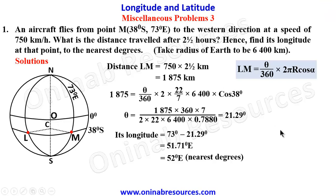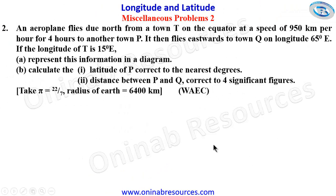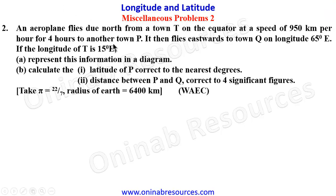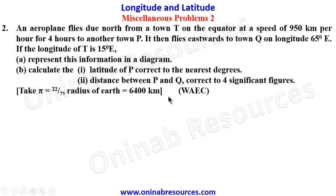We go to Problem 2. An aeroplane flies north from a town T on the equator at a speed of 950 kilometers per hour for four hours to another town P. It then flies eastwards to town Q on longitude 65 degrees East. The longitude of T is 15 degrees East. We are asked to: (a) represent this in a diagram, (b1) calculate the latitude of P to the nearest degree, and (b2) find the distance between P and Q to four significant figures. Take pi as 22/7 and radius of Earth as 6400 kilometers.